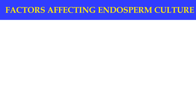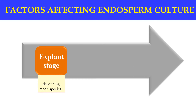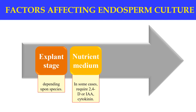What are the factors that affect endosperm culture? The factors include: first, explant stage — the culture will depend upon the explant stage, and this factor generally depends upon the species. The next factor is nutrient medium, which generally requires a very low amount of reduced nitrogen. In some cases the media should be supplemented with 2,4-D (2,4-dichlorophenoxyacetic acid), indoleacetic acid, and cytokinins.